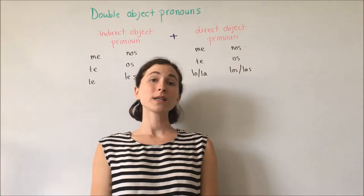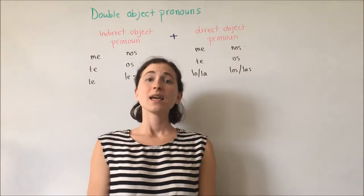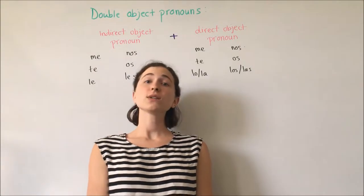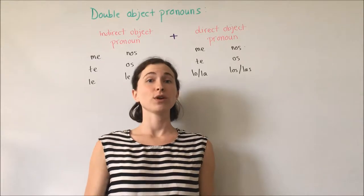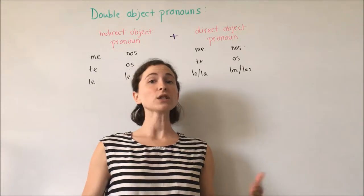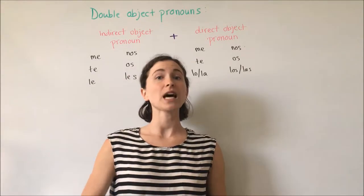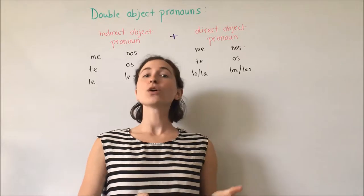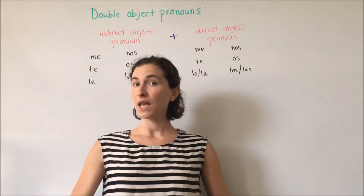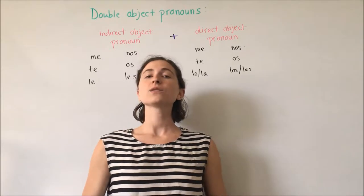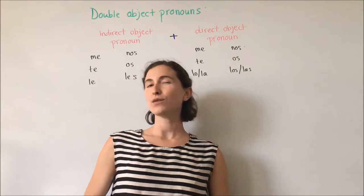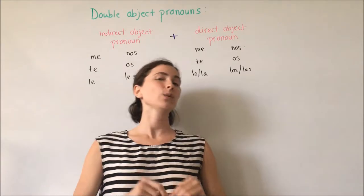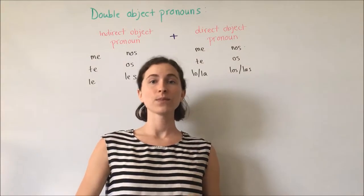In order to speak and write more concisely and less repetitively, we can use our object pronouns, and those are either our direct or indirect object pronouns. Before going over how to use both of those together, let's briefly review what an indirect object and what a direct object is.